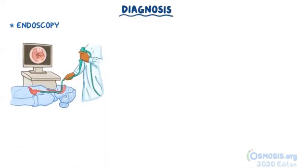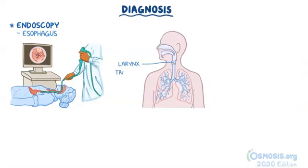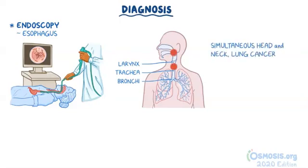Diagnosis of esophageal cancer is essentially made with endoscopy, which is when a tube with a camera at the end is placed into the esophagus to directly visualize the tumor and take a biopsy. Endoscopy of the larynx, trachea, and bronchi should also be performed, since people with squamous cell carcinoma also tend to develop simultaneous head and neck cancer and lung cancer, mainly because these cancers share the same risk factors like smoking, alcohol consumption, and obesity.